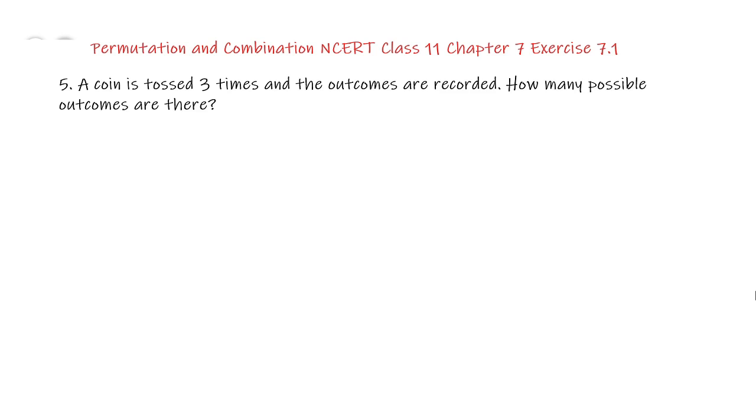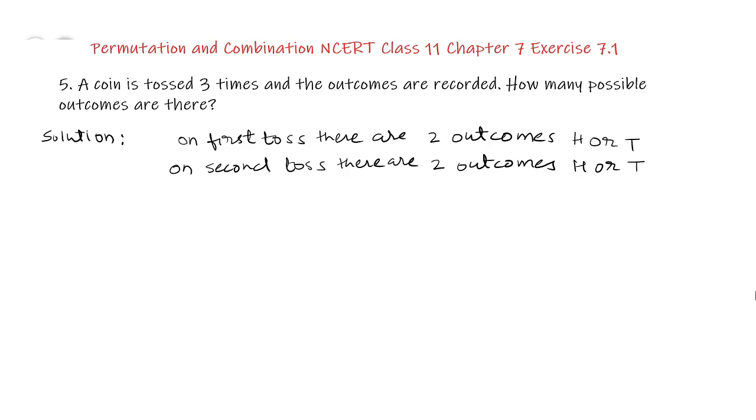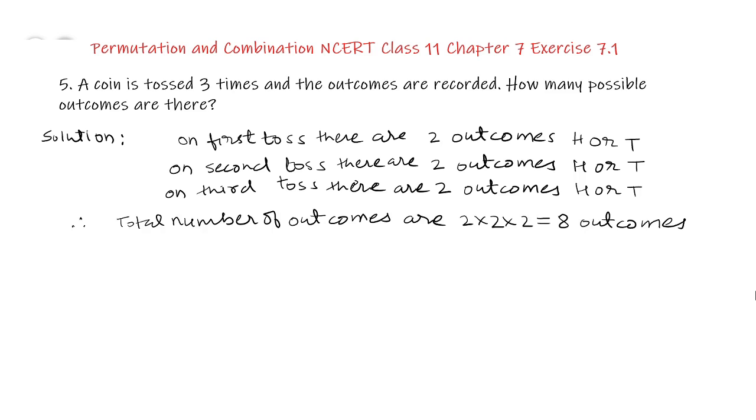How many possible outcomes are there? So our solution is: On first toss there are 2 outcomes, head or tail. On second toss there are again 2 outcomes, head or tail. On third toss there are again 2 outcomes, head or tail. Therefore from